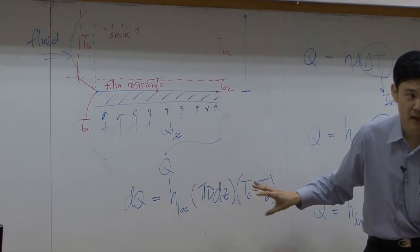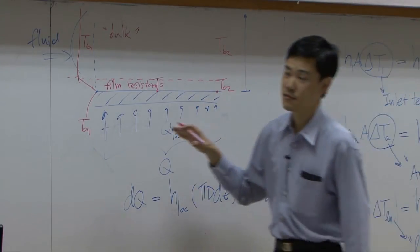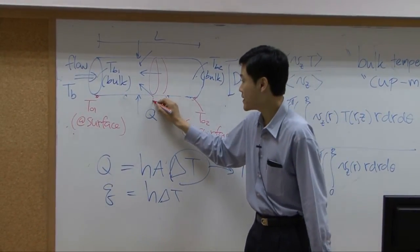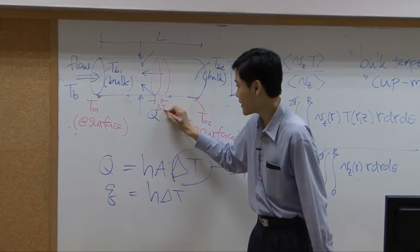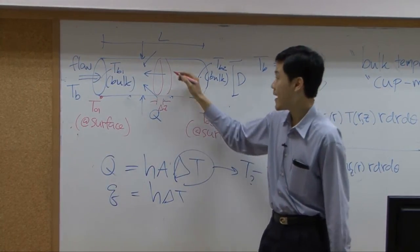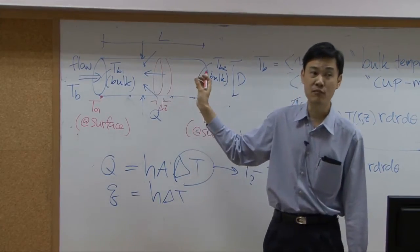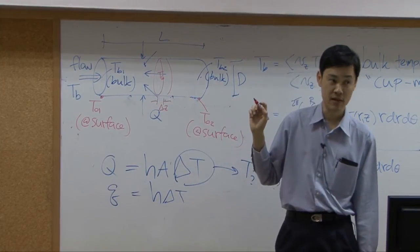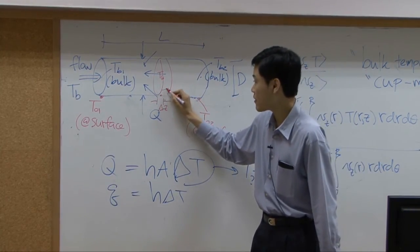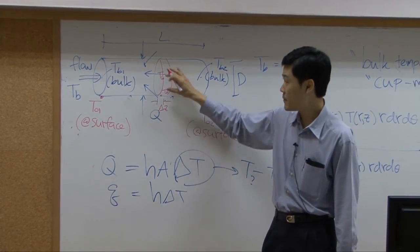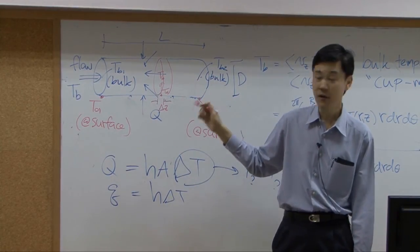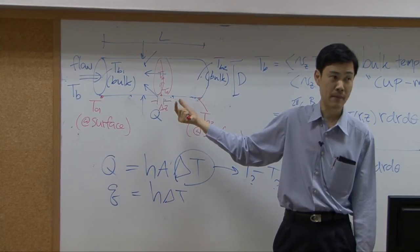This equation means you take the whole length of the pipe divided into small pieces. Suppose this piece has the length delta Z. And inside, if the length is small, if delta Z is small, temperature here, the bulk temperature would be called TB. The surface temperature is called T0. The difference between TB and T0 induced heat transfer. That would be driving force for heat transfer within this wedge.